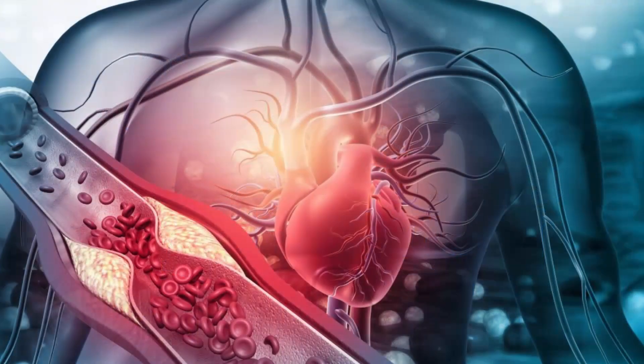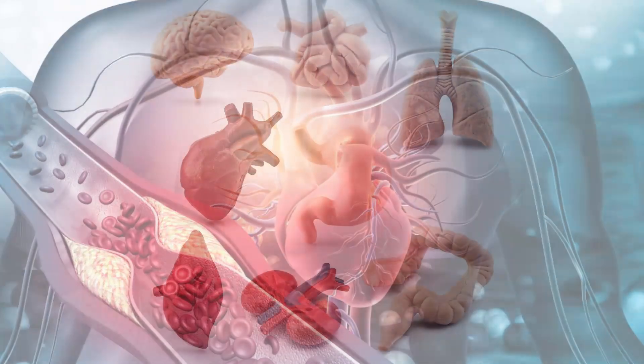Words to learn: blood, blood vessels, carbon dioxide, circulation, circulatory system, heart, oxygen, pressure, pulse.